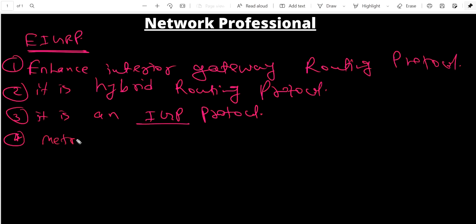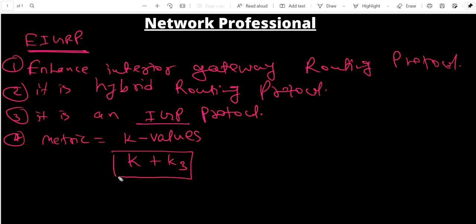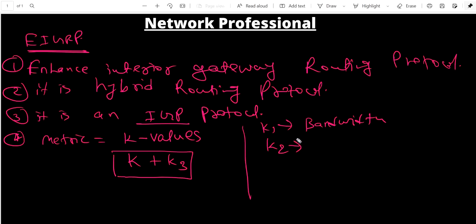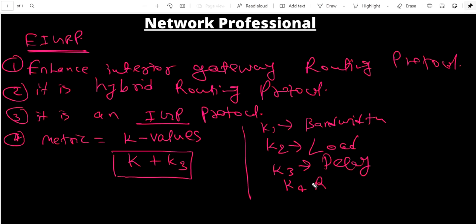EIGRP calculates metric on the basis of K values. By default, EIGRP will use K1 and K3 to calculate metric. EIGRP can use all K values — there are five types: K1 is bandwidth, K2 is load, K3 is delay, K4 is reliability, and K5 is MTU.